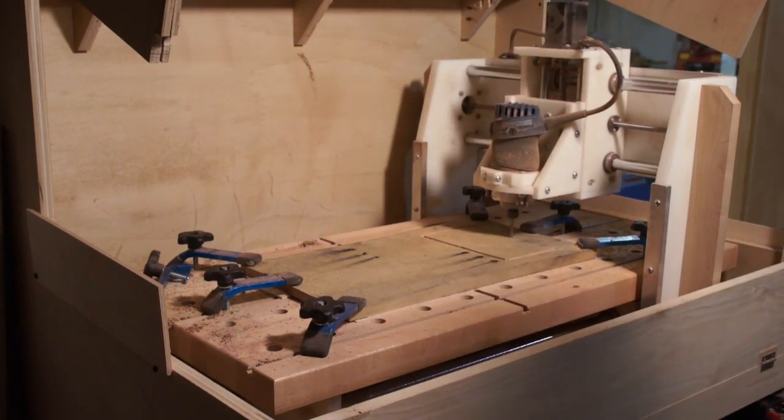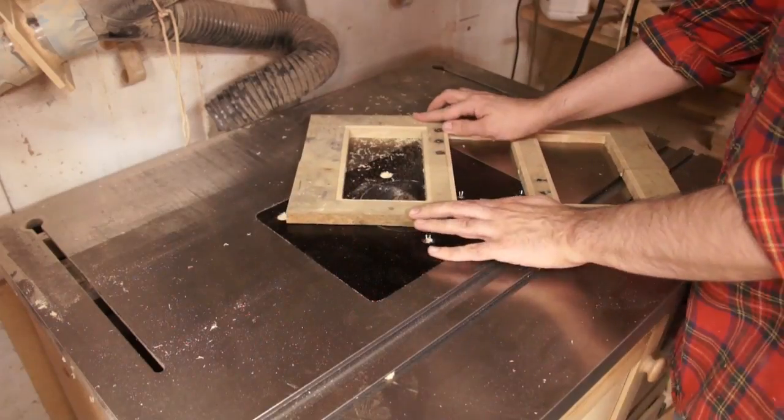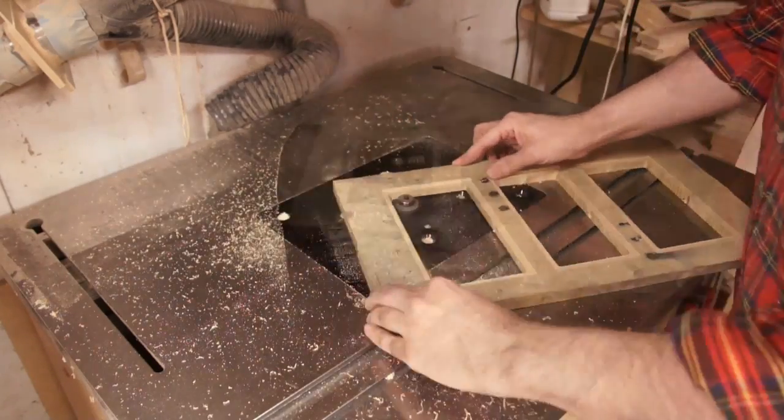So after the CNC did its work all I had to do was put a rabbet on the backside and square up the corners.